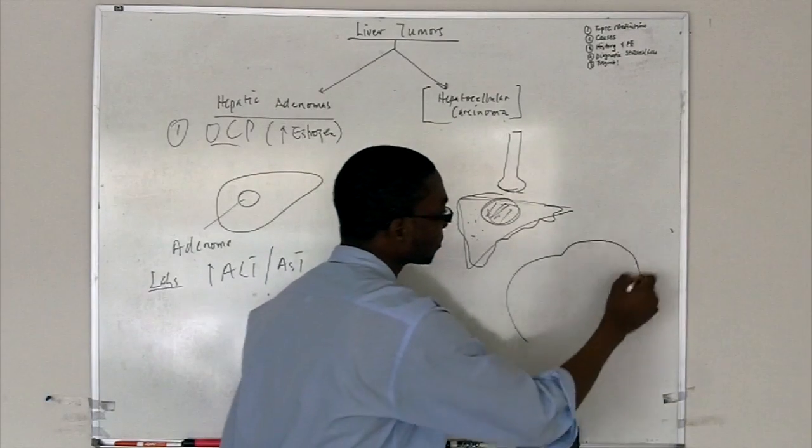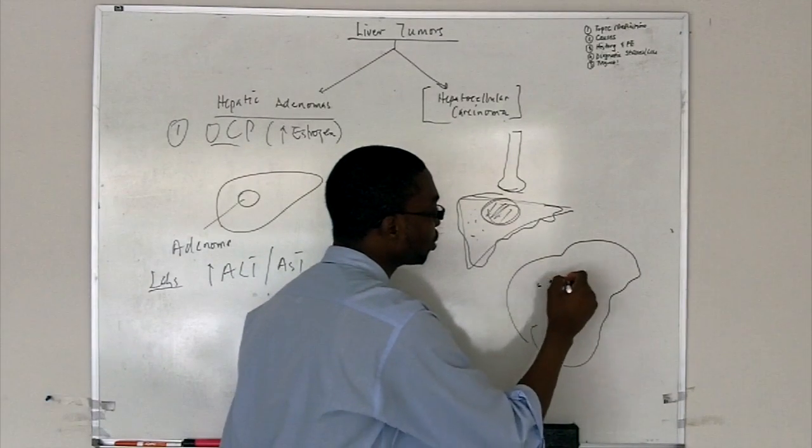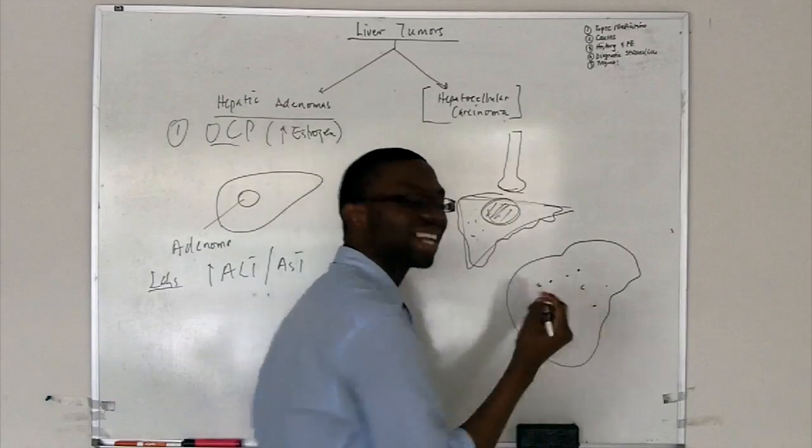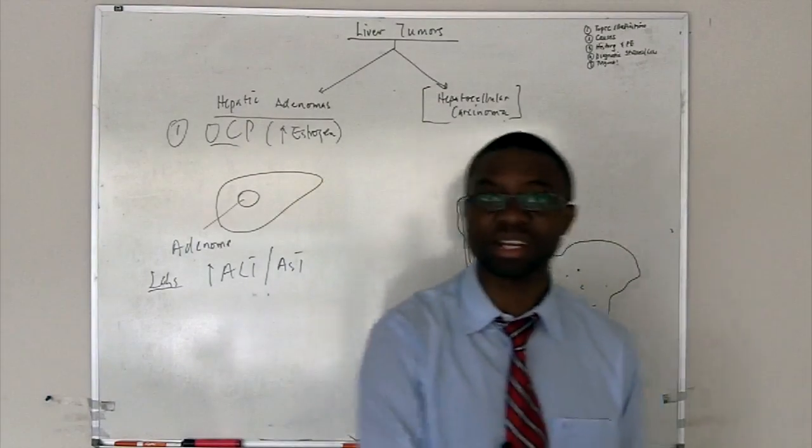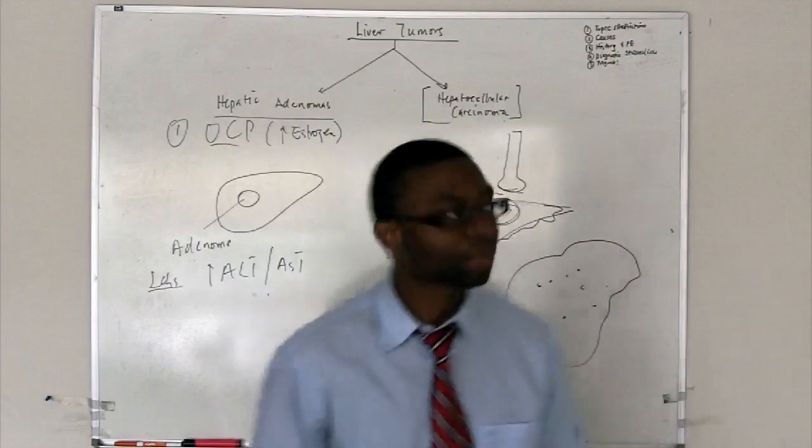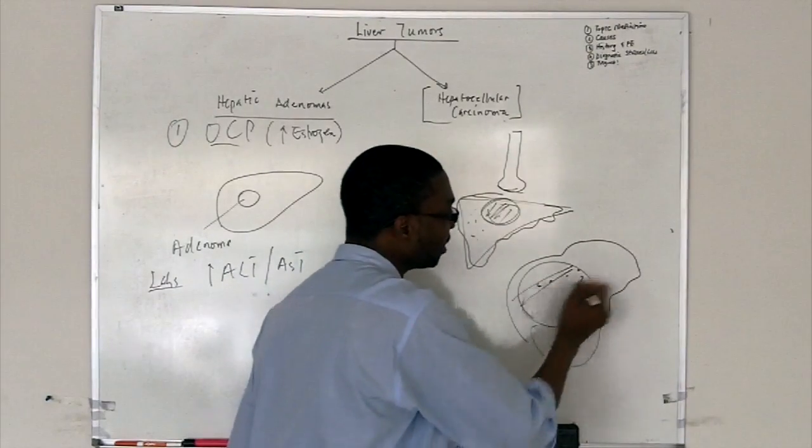We can get a CT scan. We get a CT scan, and you see all these little, little dots. That is metastasis. That is cancer. They're lighting up on CT.